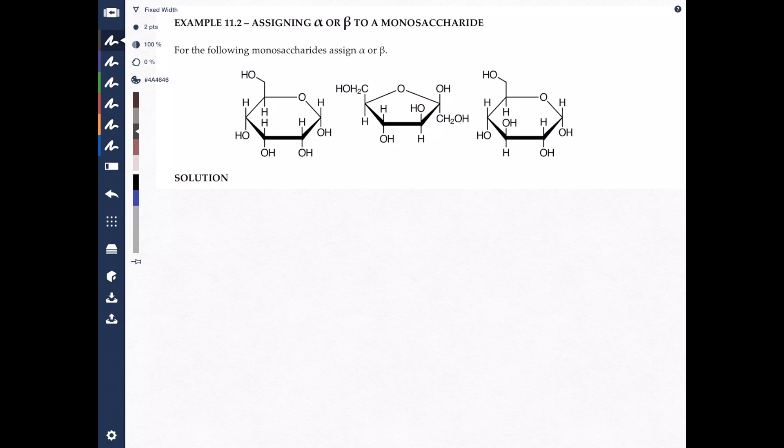Now, when assigning alpha and beta, we first want to look at the anomeric carbons, and I'm going to circle those right now on each example. These are the anomeric carbons. Now, how do you tell if a carbon is anomeric or not? It's very simple. You find the oxygen in the ring, which is right there, right there, and right there.